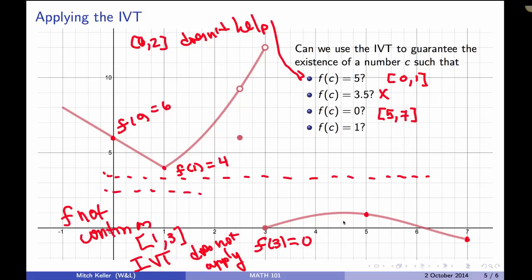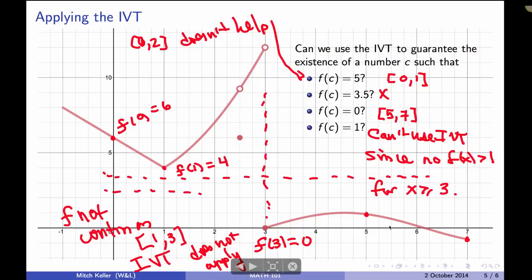Now, f(c) equals 1 is a little bit tricky, because we look at the graph and it looks like f(c) equals 1, but we can't use the IVT because we need somewhere on this piece of the graph. We can't use anything over here because of this discontinuity at 3. And nowhere in the part where f is continuous from 3 to 7 do we see a value greater than 1. So we can't use the IVT since no f(x) greater than 1 for x greater than or equal to 3. So the intermediate value theorem is useful, but not without its limits.